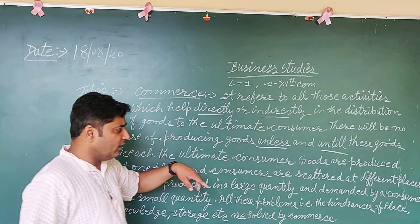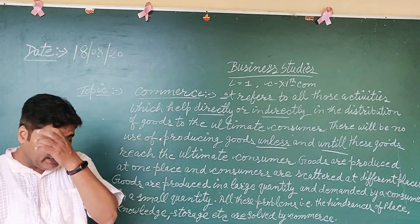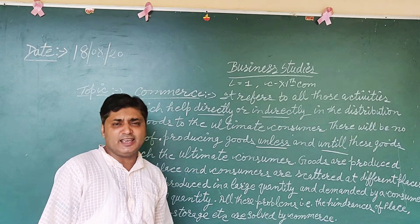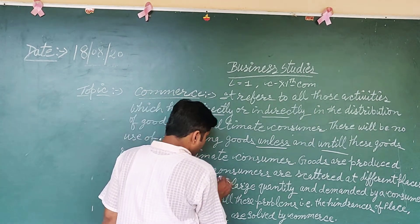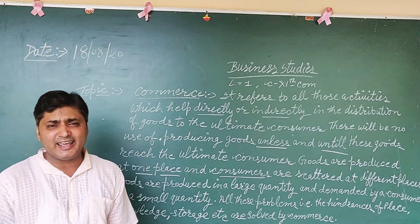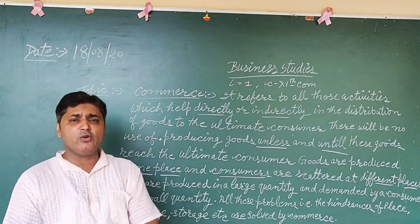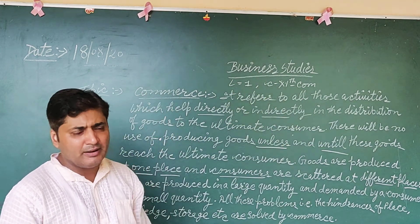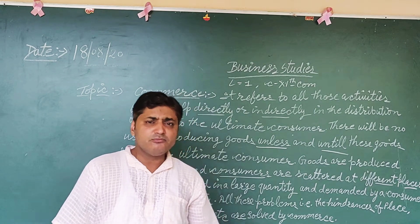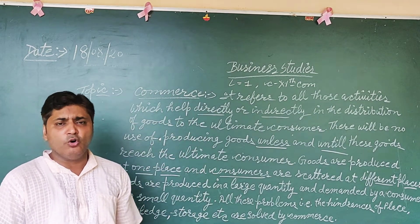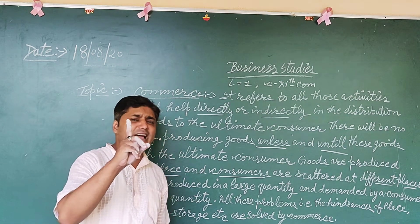Under commerce, goods are produced at one place but the consumer is scattered at different places. The place of production is fixed, but from the point of view of distribution, goods can be available at different markets. The same goods can be available in one market, another market, and a third market, so consumers can purchase from whichever market is within their reach.